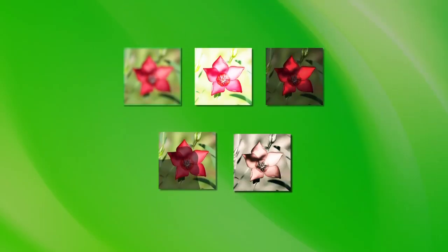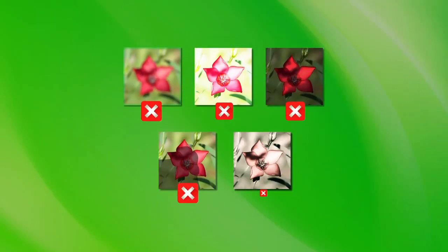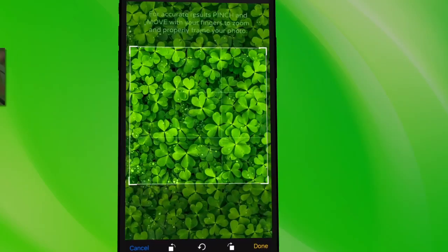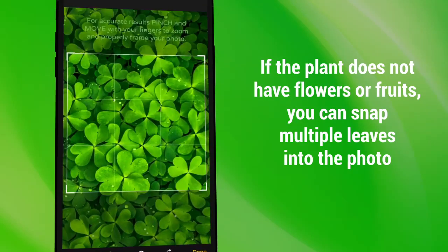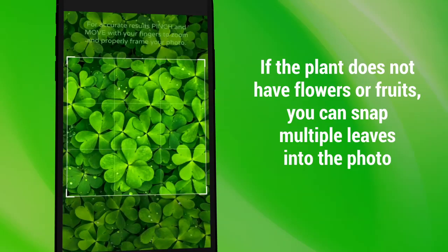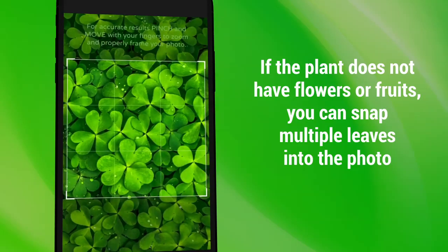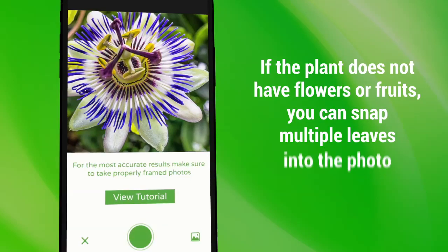Also, avoid blurring, overexposure, darkness, shadows, and anything that may cause the plant to not look natural. If the plant does not have flowers or fruits, you can snap multiple leaves into the photo.